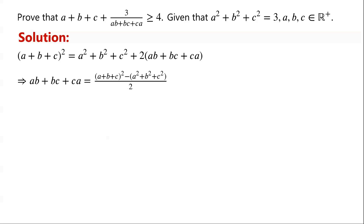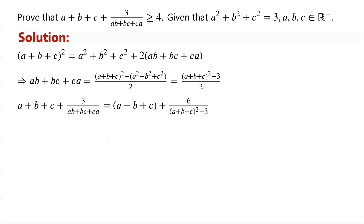So ab + bc + ca = [(a + b + c)² − (a² + b² + c²)] / 2. Since a² + b² + c² = 3, we can write ab + bc + ca = [(a + b + c)² − 3] / 2. Then the left-hand side of the inequality can be written as (a + b + c) + 6 / [(a + b + c)² − 3].